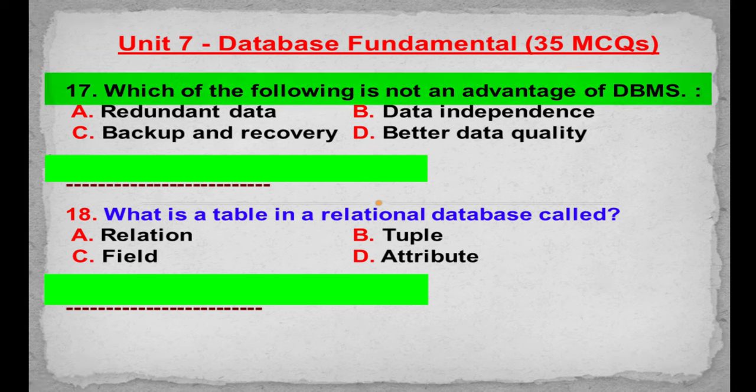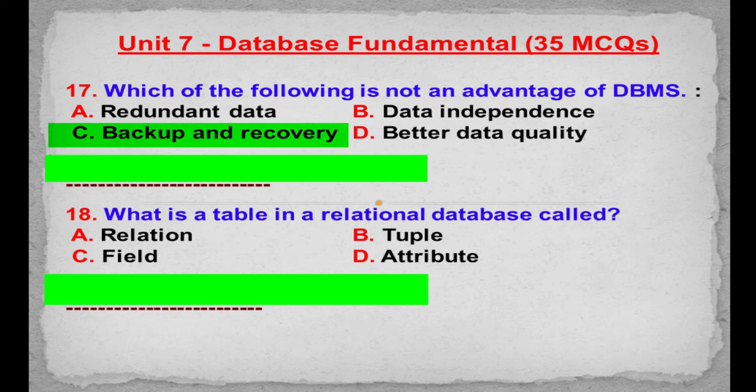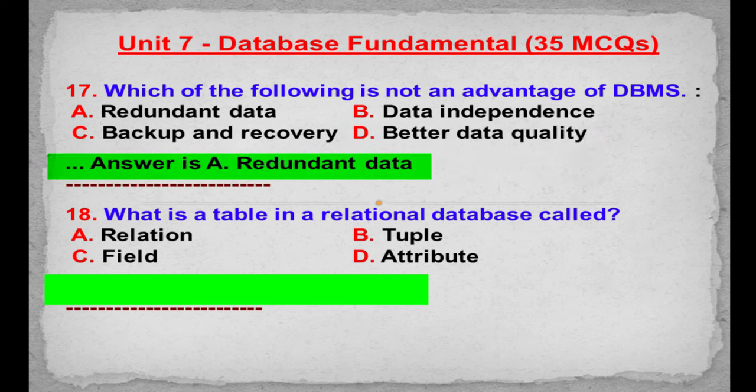MCQ number 17: Which of the following is not an advantage of DBMS? Option A: Redundant data. Option B: Data independence. Option C: Backup and recovery. Option D: Better data quality. Correct answer is Option A: Redundant data.